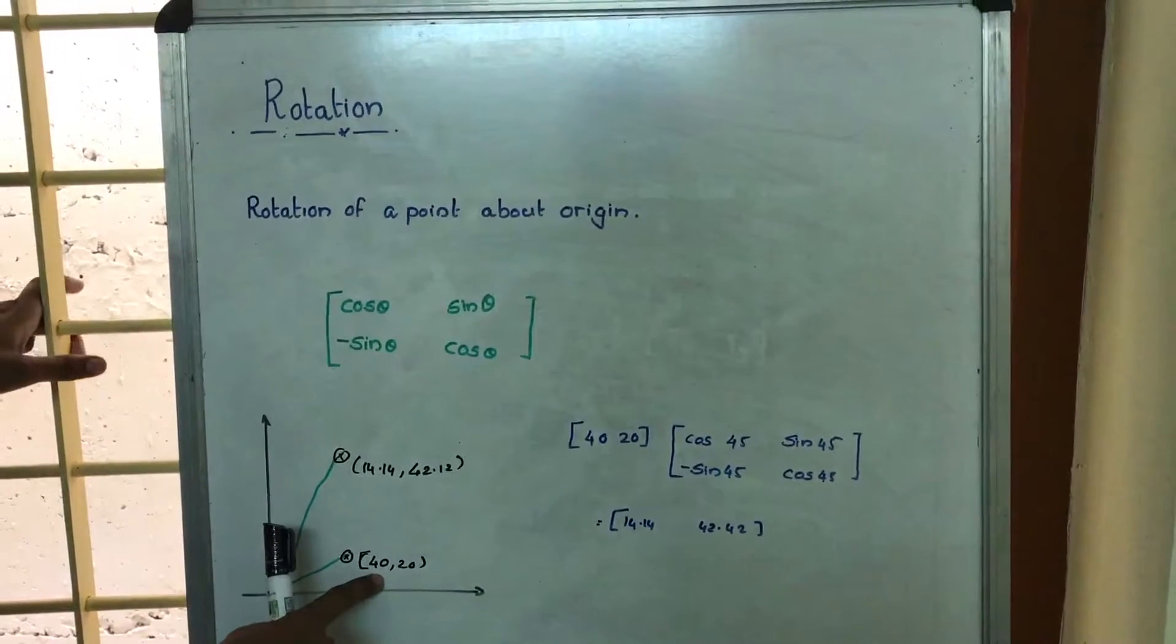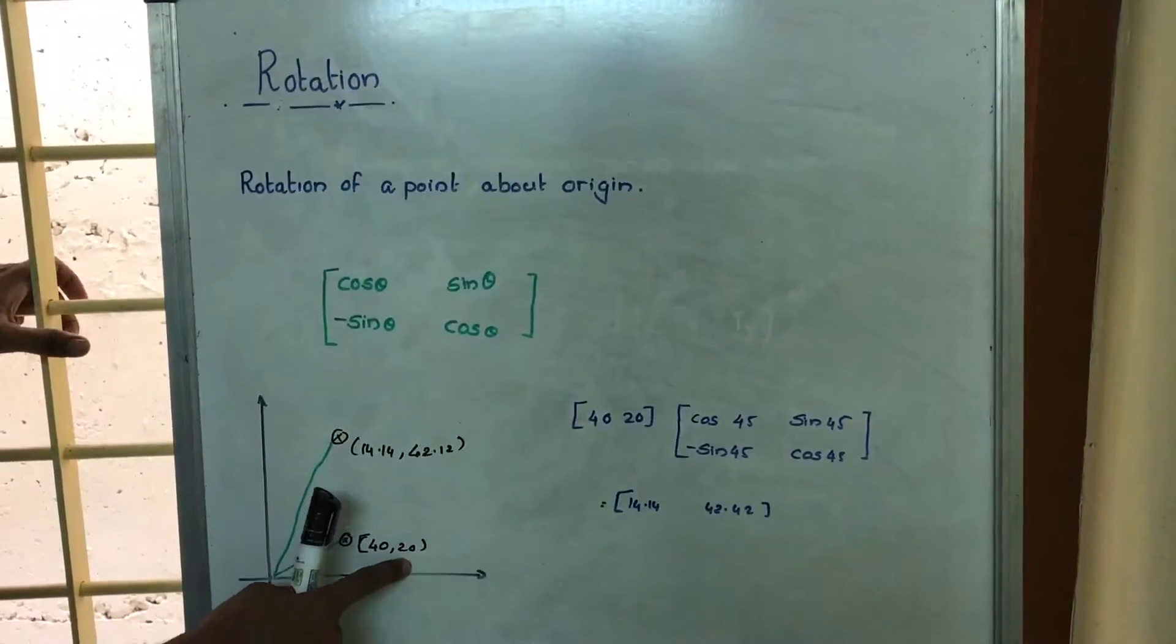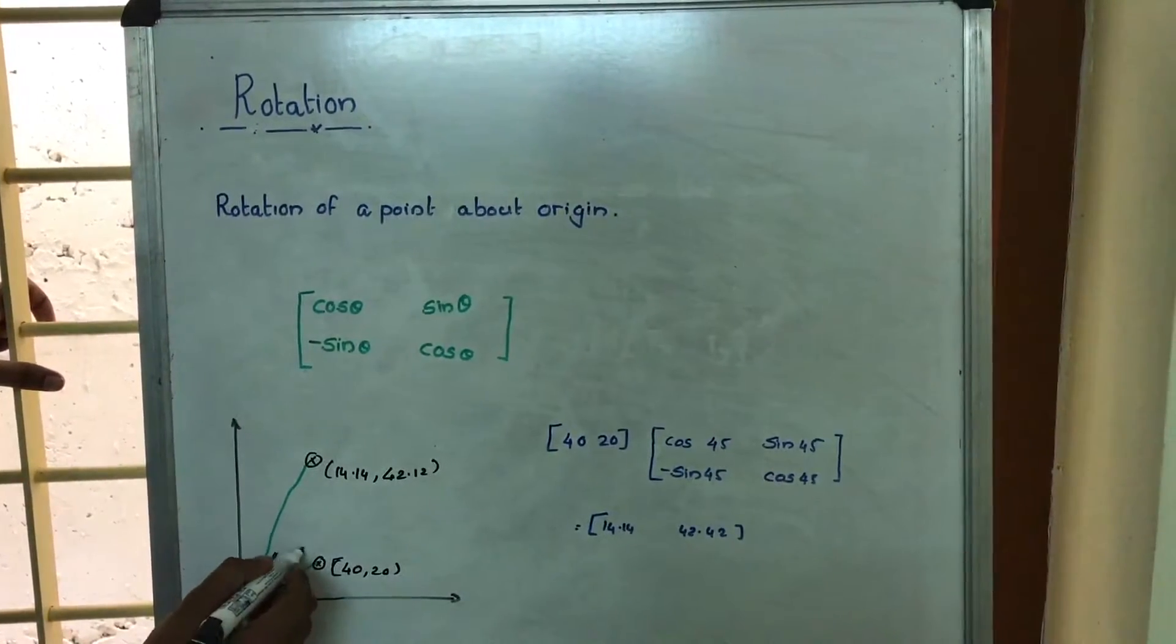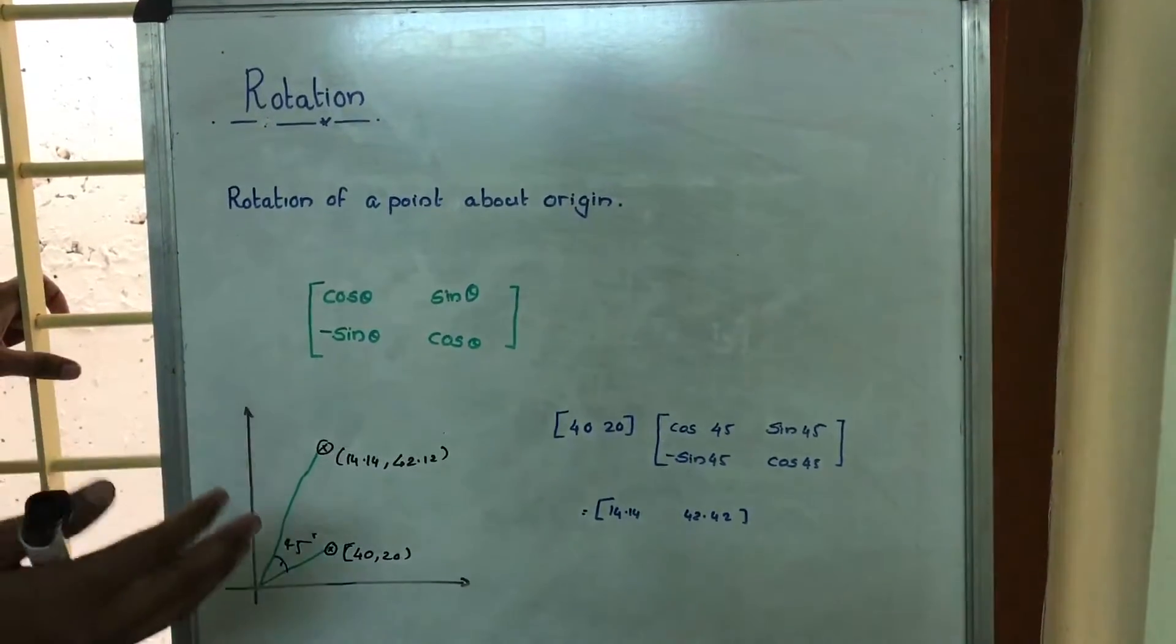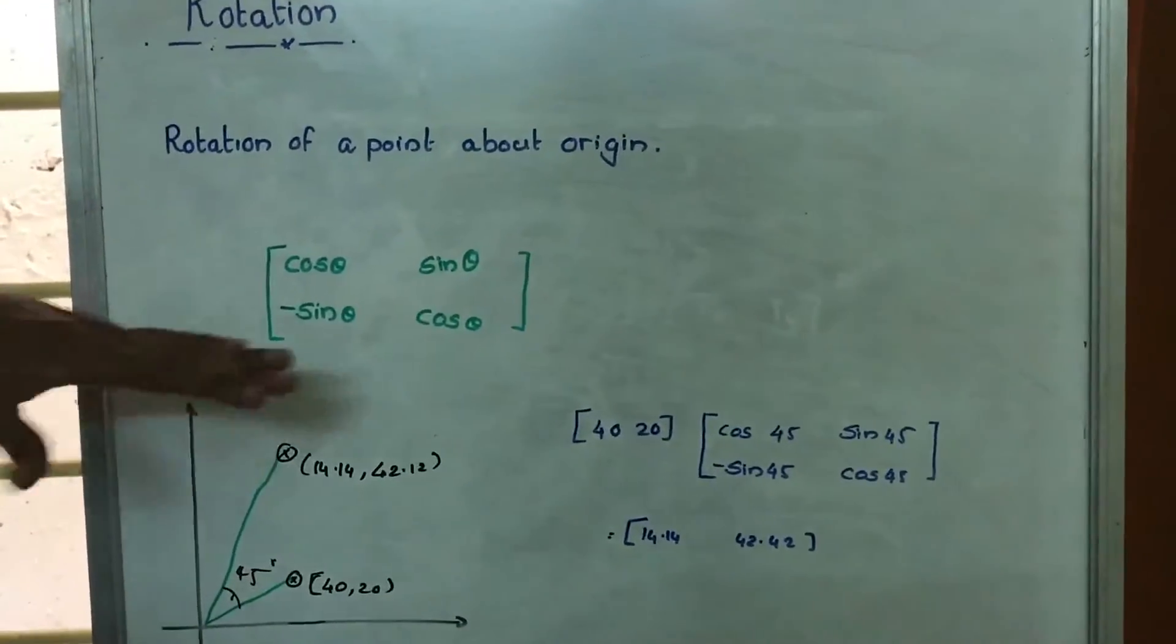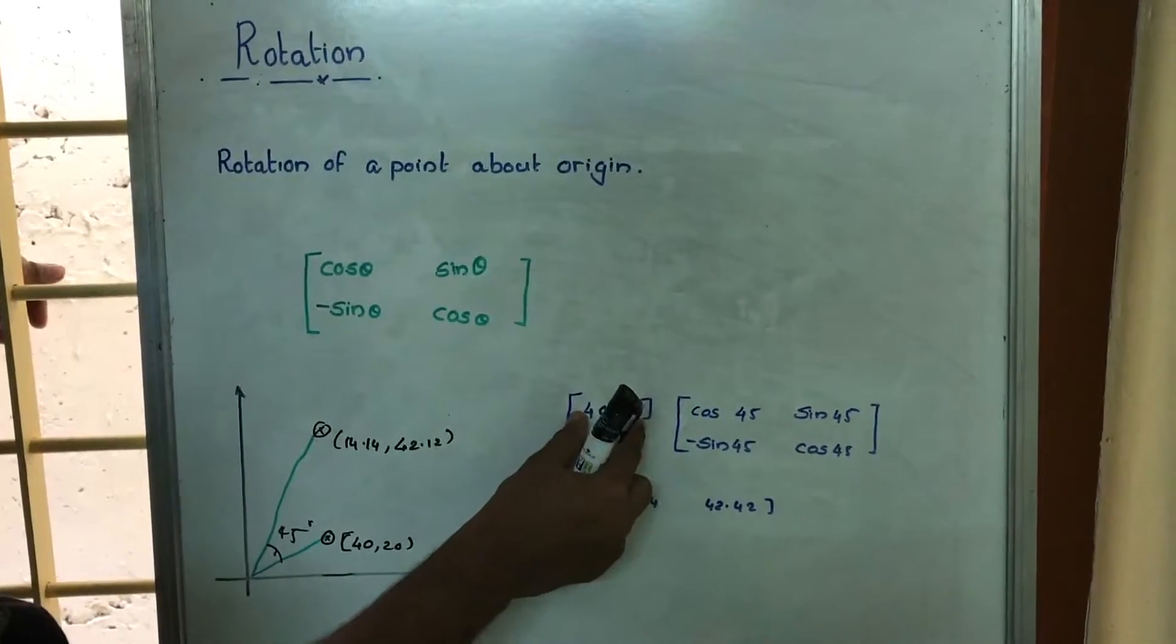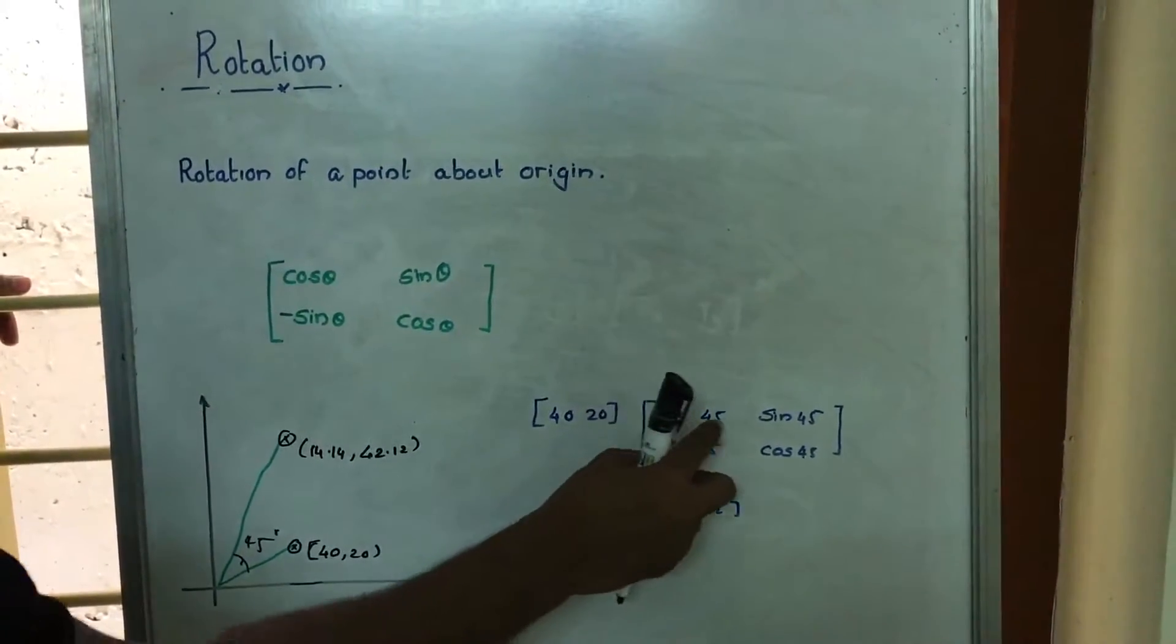Suppose we have a point (40, 20) and we want to rotate it by an angle of 45 degrees. Let's look at what happens when we multiply with this matrix. So (40, 20) is multiplied with cos 45°, sin 45°, -sin 45°, cos 45°.